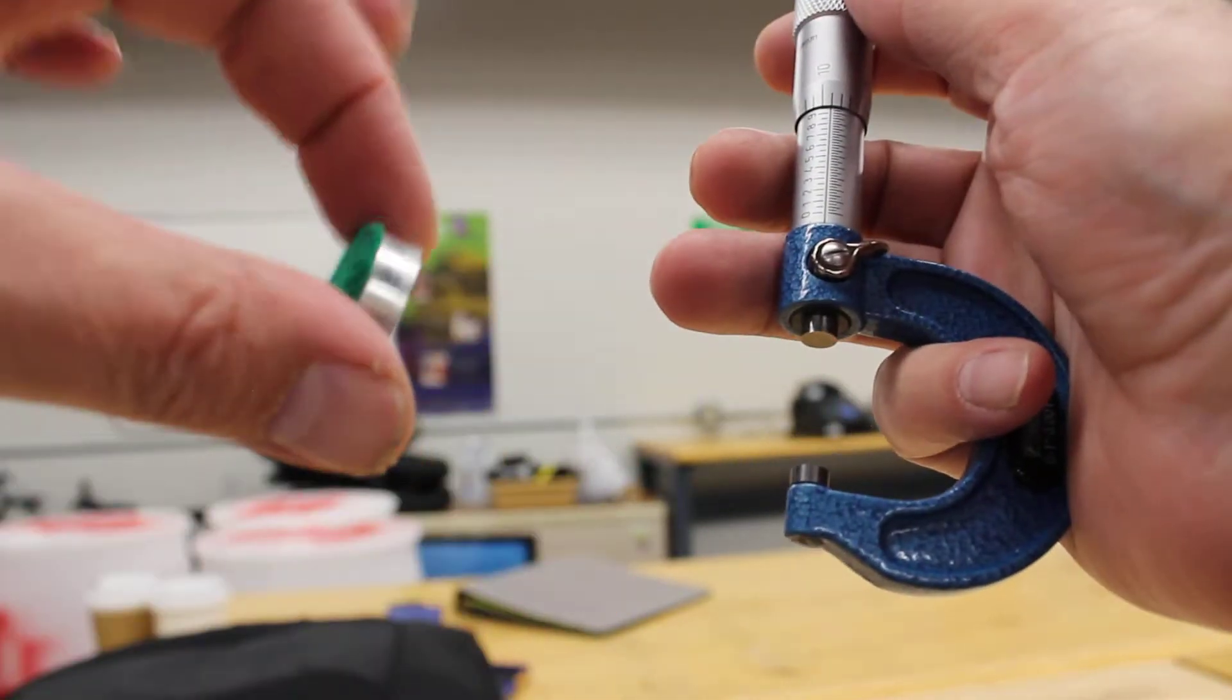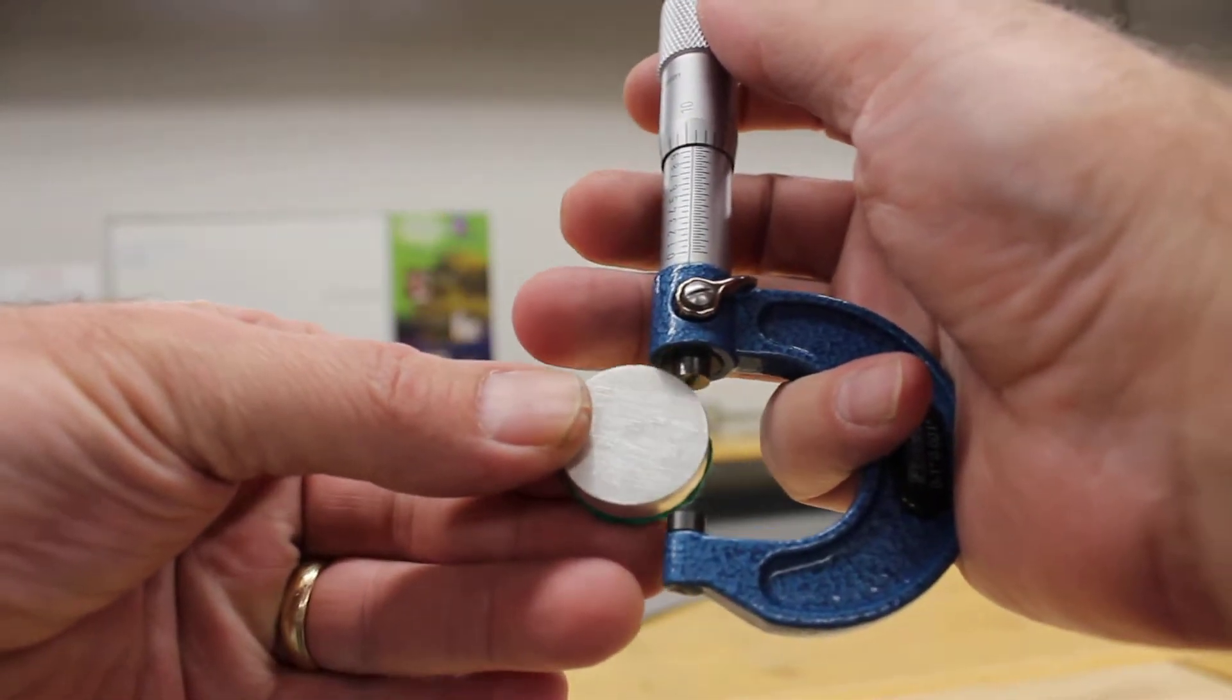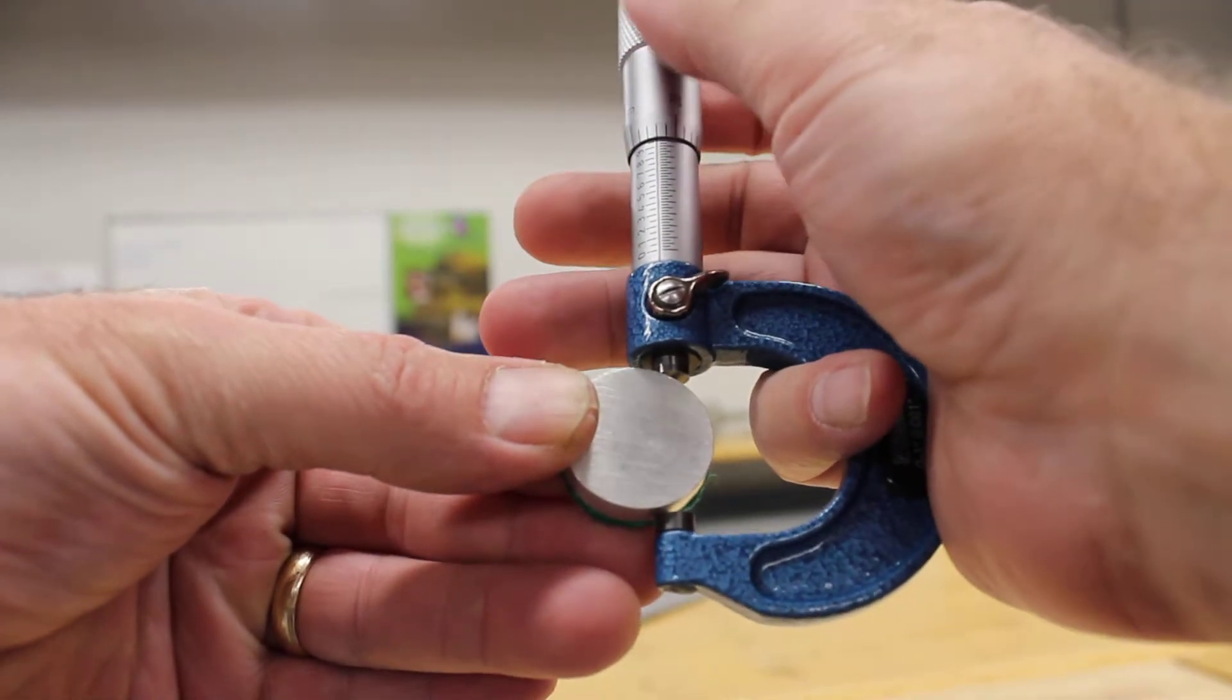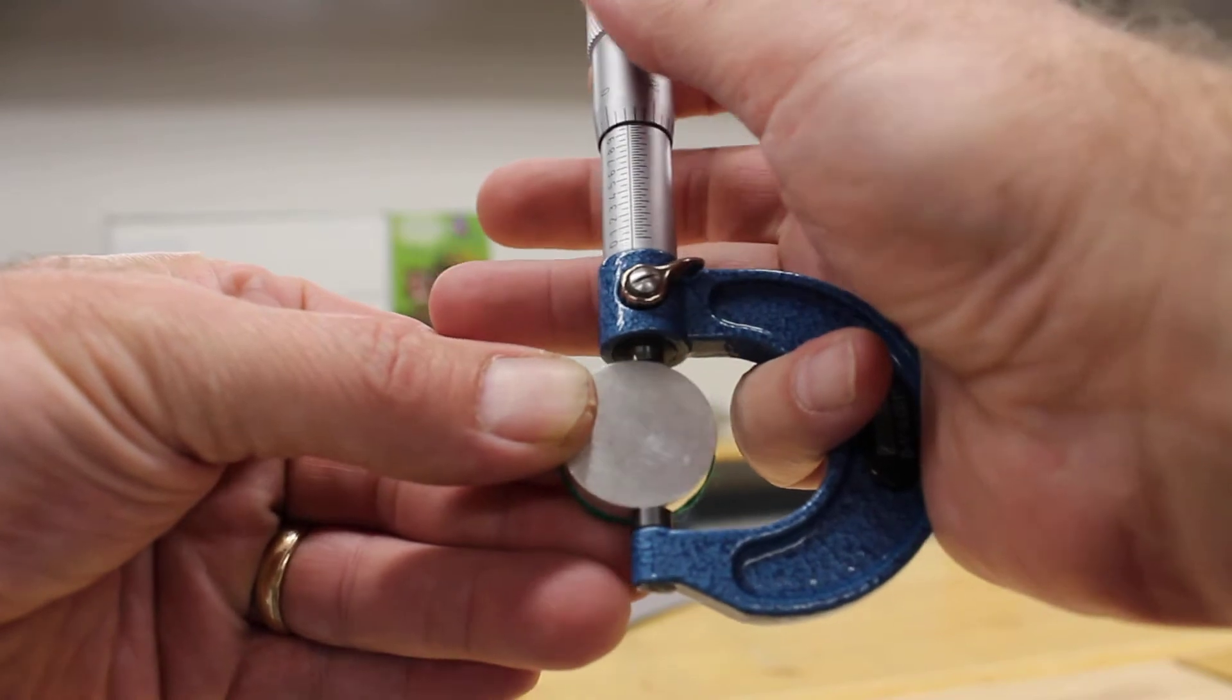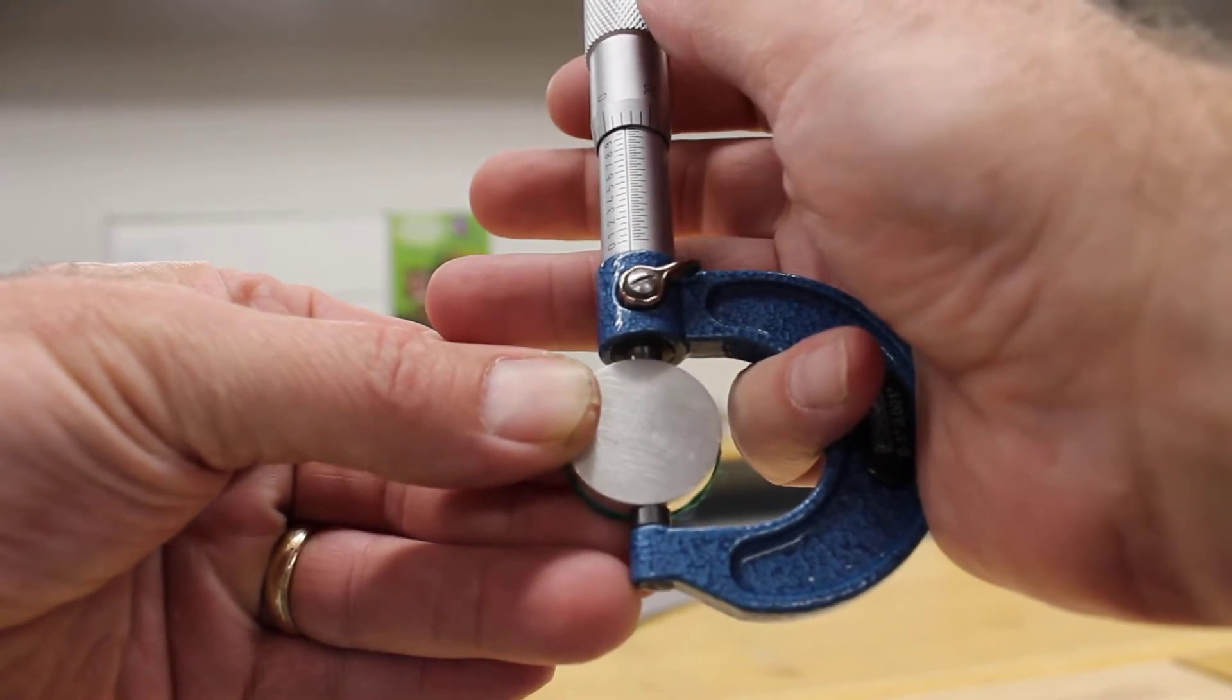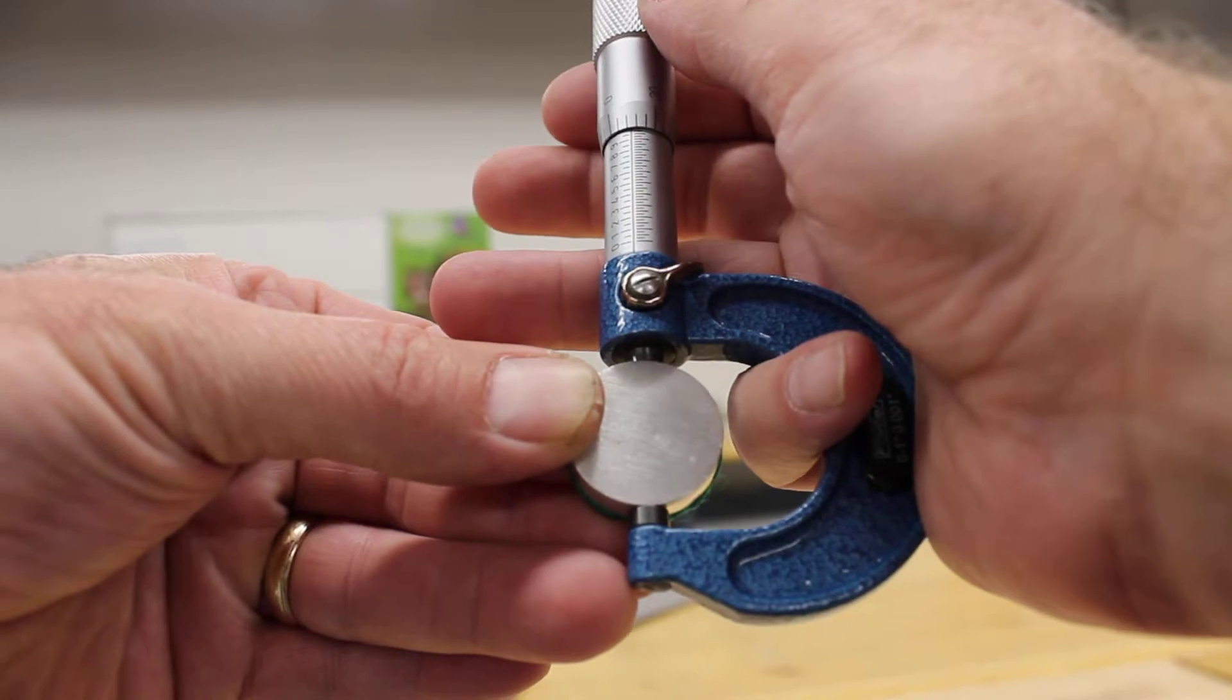I'm going to take this round part and measure with the micrometer. I'm going to want to make sure that I slowly open it up so I go bigger than the piece. I want to measure right across the middle. If I don't measure it in the middle area, we're not going to get an accurate reading.